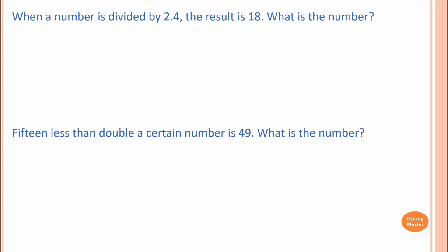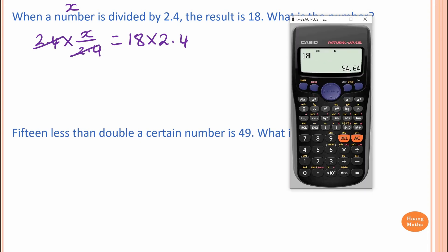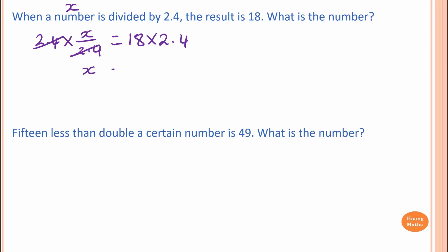Please stop the video and try this one yourself. First one: we don't know what the number is, so we put x. Then we divide by 2.4, so that means x over 2.4 equals 18. To solve this, we multiply both sides by 2.4 — that cancels out. So 18 times 2.4, and the answer is 43.2. So x is equal to 43.2. Therefore, the number is 43.2.